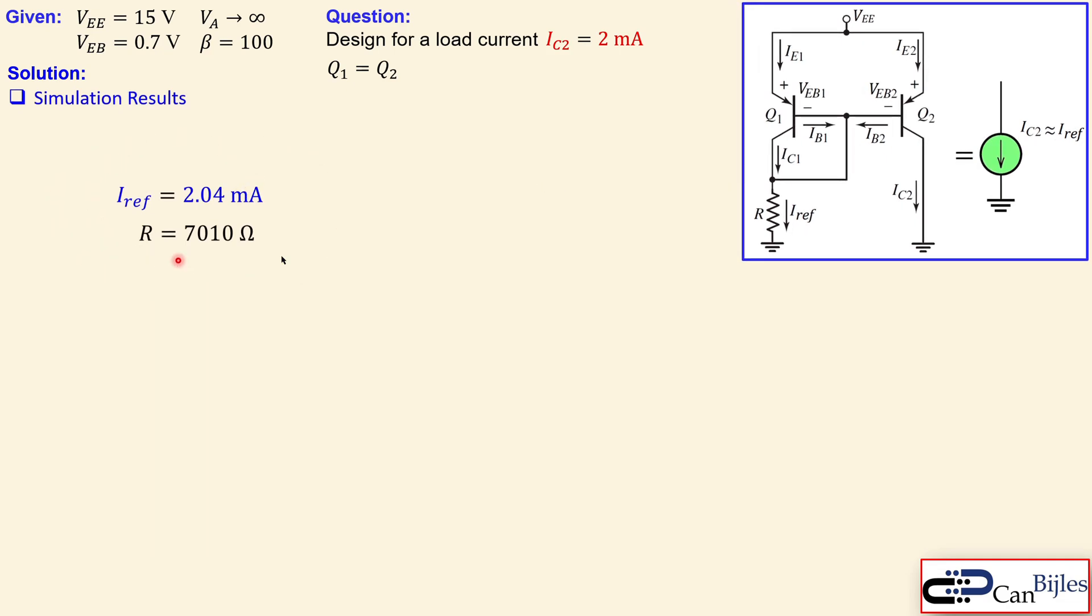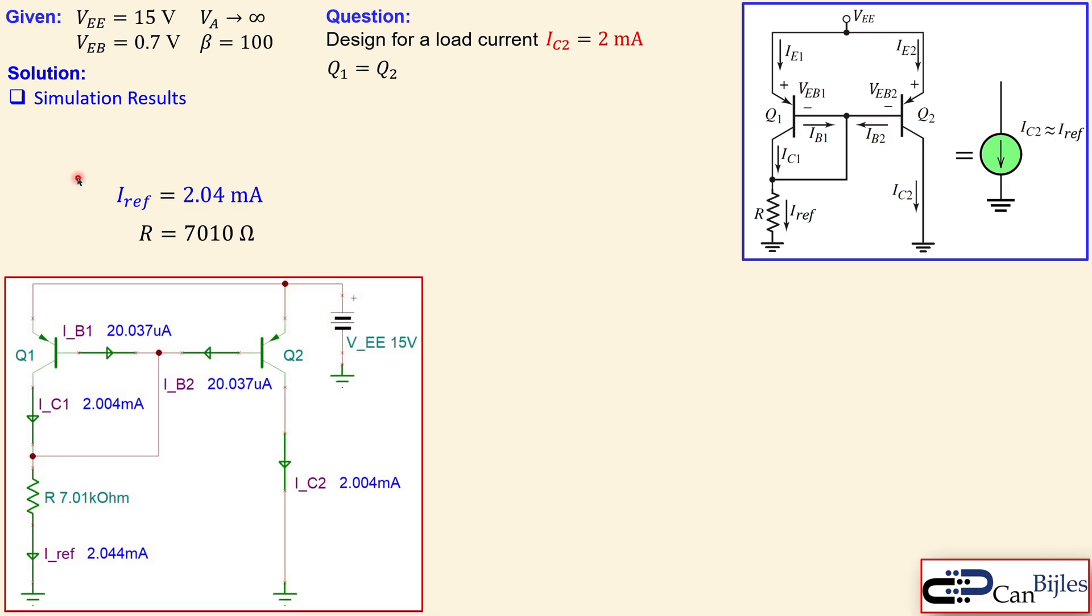So these are the values we just calculated. So as a summary and this is the simulation result using this resistor value. Here you can see that R. What you get is the reference current is 2.044 milliamps.